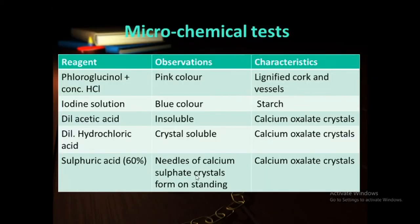For microchemical tests: cork and xylem vessels are lignified, showing pink color in presence of phloroglucinol and concentrated HCl (1:1 mixture). Starch grains show blue color in presence of iodine. For calcium oxalate crystals: crystals are insoluble in dilute acetic acid; they dissolve in dilute hydrochloric acid; in 60% sulfuric acid, needle-shaped calcium sulfate crystals are formed — conversion of calcium oxalate to calcium sulfate.